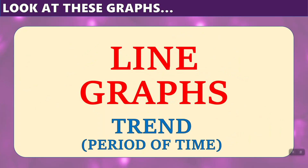Line graphs often show a trend over a period of time, which means it shows us how things fluctuate up and down over a series of days, weeks, months, and so on — usually, but not always.